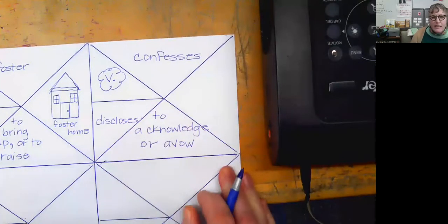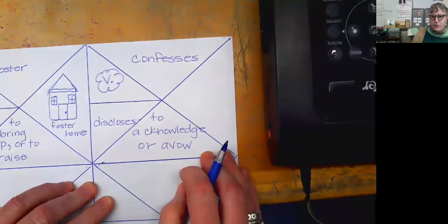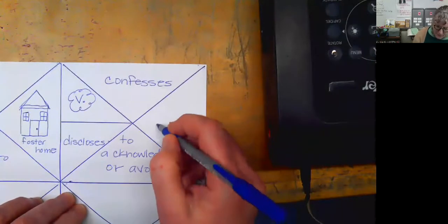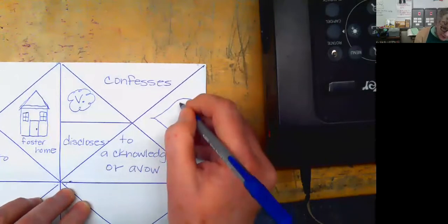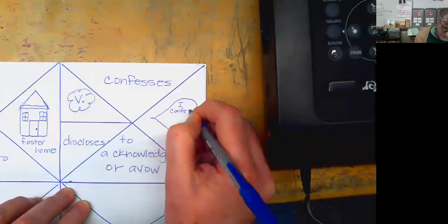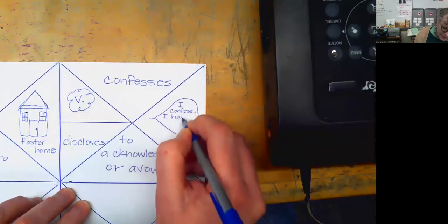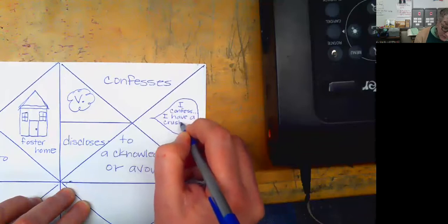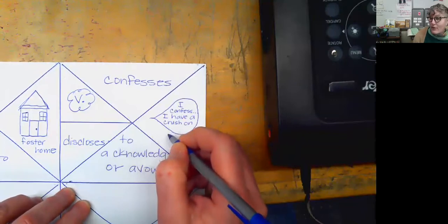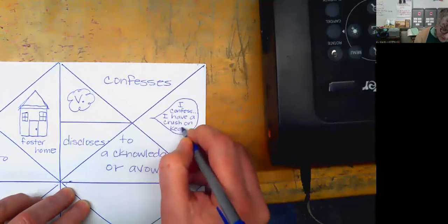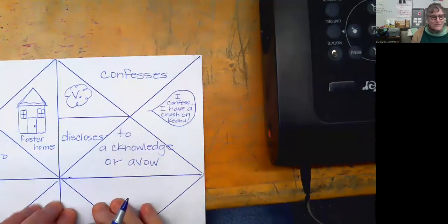So if someone confesses something, they're telling almost like telling a secret, right? You're telling somebody something that is kind of personal. Right. And usually. So you might say, I confess. I have a crush. On Keanu, Keanu Reeves. I do have a crush on Keanu Reeves. Right. So if you confess, you're telling someone something that you probably shouldn't tell them.